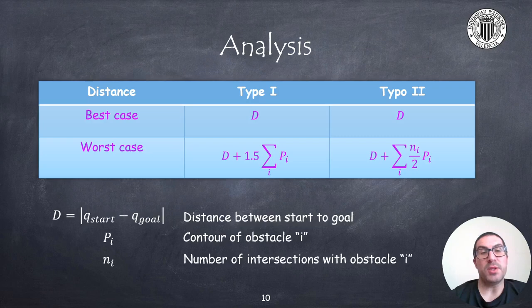To finish this presentation, I would like to analyze the best and worst cases in terms of travel distance for each of the algorithms. Obviously, the best case for both algorithms is that the travel distance is just the distance between the start and the goal configuration. However, this is quite unlikely because it implies that there are no obstacles at all.